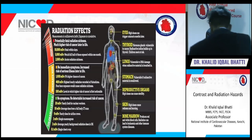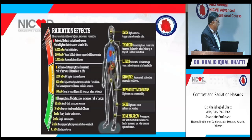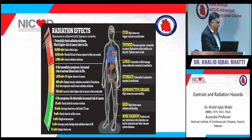Radiation affects the body from head to toe. In the eyes it can cause cataracts; in the thyroid, cancer; in the lungs, DNA mutations and lung cancer. Ingested or inhaled radiation leads to gastrointestinal problems. Reproductive organs are very sensitive — radiation can cause sterility. The skin shows reddening and burning, and bone marrow exposure commonly leads to leukemia.